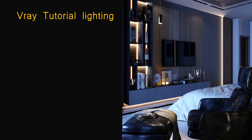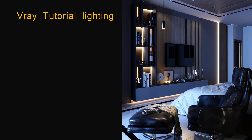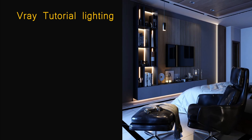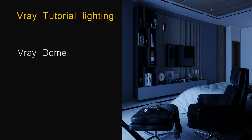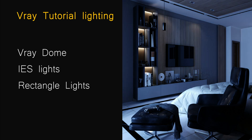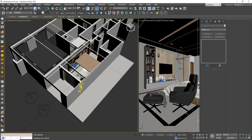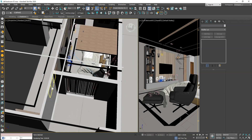In this video we learn how to light an interior scene at night time. For this, we use a V-Ray dome, then make the room warmer with IES lighting. We also add some decorative lights and spotlights to create contrast, and employ a technique to enhance reflections. First, take a look at the entire scene.